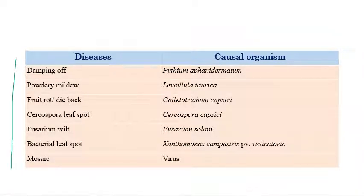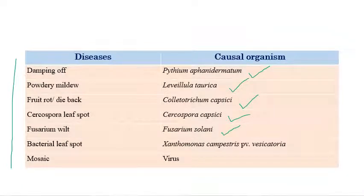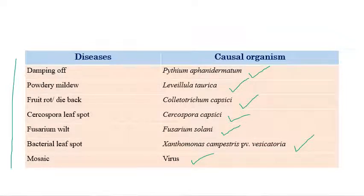The first one is damping off, which is caused by Pythium aphanidermatum. The second one is powdery mildew, which is caused by Leveillula taurica. Fruit rot or dieback, which is caused by Colletotrichum capsici. Cercospora leaf spot, which is caused by Cercospora capsici. Fusarium wilt, which is caused by Fusarium solani. Bacterial leaf spot, which is caused by Xanthomonas campestris pathovar vesicatoria. And mosaic, which is caused by mosaic virus.